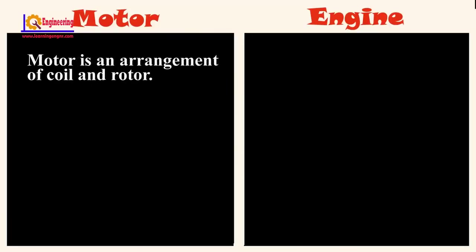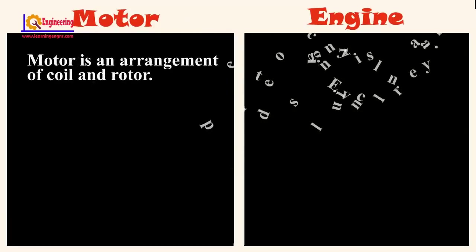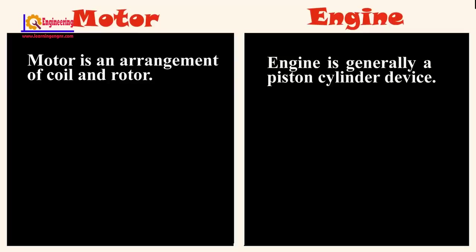A motor is an arrangement of coil and rotor. An engine is generally a piston-cylinder device.